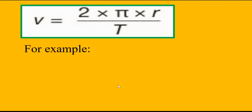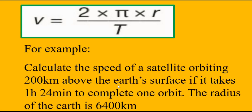Let's take an example. Calculate the speed of a satellite orbiting 200 kilometers above the Earth's surface if it takes one hour and 24 minutes to complete one orbit. The radius of the Earth is 6400 kilometers.